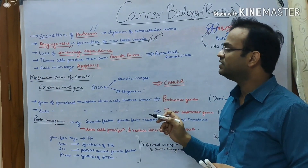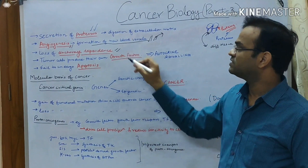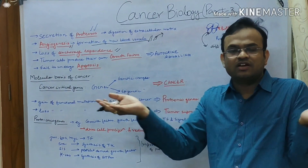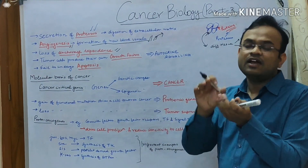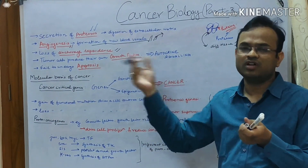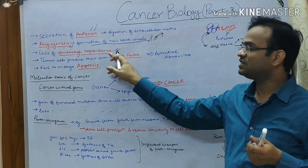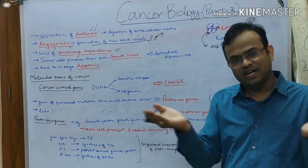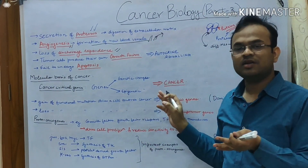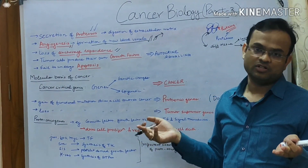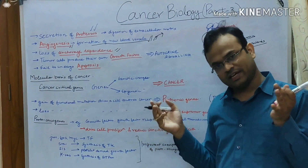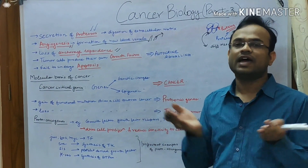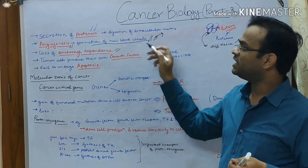Now coming to the third point, that is loss of anchorage dependence. In normal cells, a cell requires a substrate or a layer or a base to which it can attach, and only then will it reproduce or proliferate. But in the case of cancer cells, they do not require any anchorage or any type of membrane to attach. They can reproduce in a semi-liquid or semi-solid medium as well.